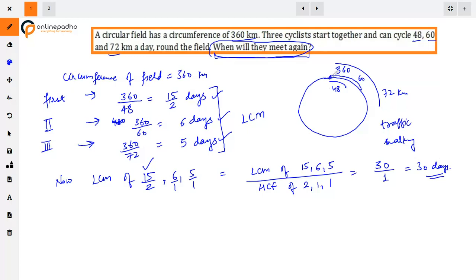When all three cyclists complete their cycles and return to the starting point together, they will meet again after 30 days. Thank you.